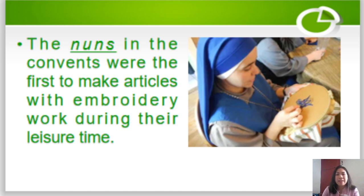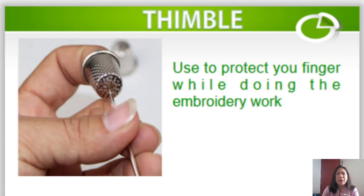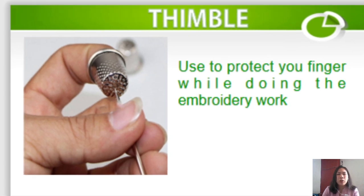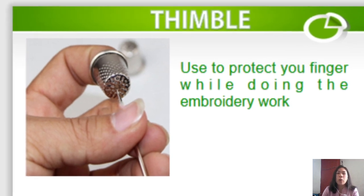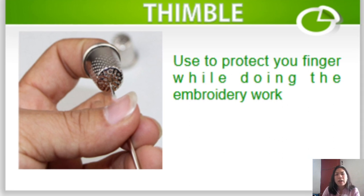Let us now have the different embroidery tools. The first tool is the thimble. Thimble is used to protect your finger while doing the embroidery work. So we have to use the thimble.